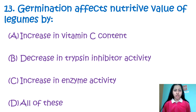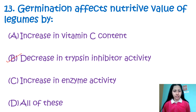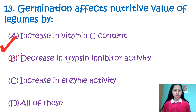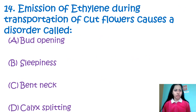Question number 13: Germination affects nutritive value of legumes by — increasing vitamin C content, decrease in trypsin inhibitor activity, increase in enzyme activity, or all of these. When a seed germinates, it decreases the trypsin inhibitor activity, while other nutritive contents increase. So the correct answer is option number B — decrease in trypsin inhibitor activity.